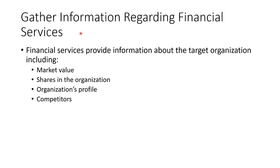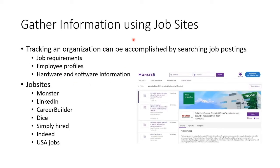You can also check on a company by looking at their financial services — what's their market value, what shares are in the organization, the profile of the organization and their competitors. We can look on the job boards, and especially job sites will tell us what technologies they use and where they're weak. Who are they hiring because they don't have enough of somebody? You can look at job requirements, employee profiles, and hardware and software information across a whole bunch of job sites.